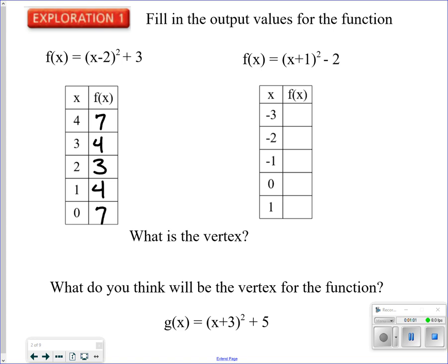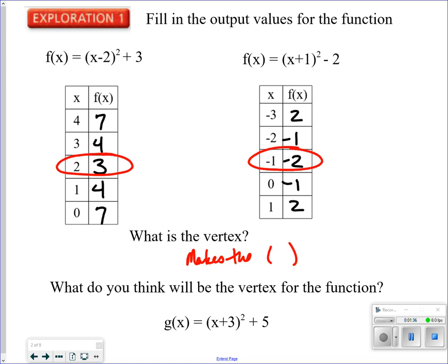Now let me fill out the next one a little quicker. The values are negative 2, negative 1, and positive 2. What do you notice about the middle one? The vertex at (2, 3) and at (-1, -2) — the numbers on either side of those are the same. So the vertex is the number that makes the parentheses equal 0, sometimes referred to as the opposite of what's in the parentheses. Positive 2, positive 3 is the vertex point, and negative 1, negative 2 is the vertex point.